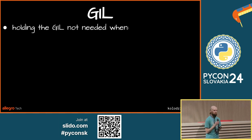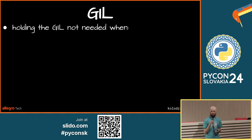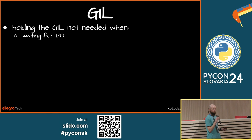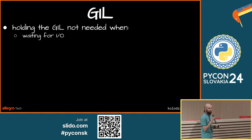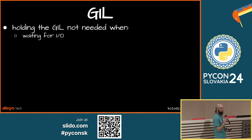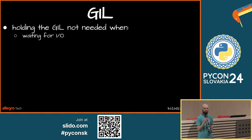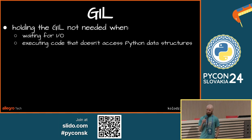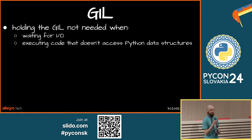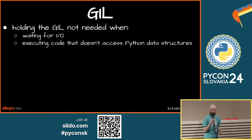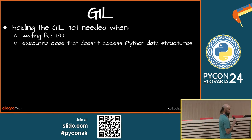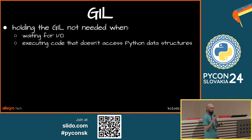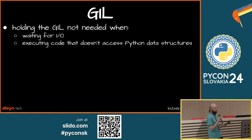It's very useful to know that the GIL doesn't need to be held by a thread at all times. For example, when waiting for IO — imagine two threads, one calls for a file on disk and the second wants to run. The first one, while waiting for IO access, doesn't need to hold the GIL; the other one can just execute and make computations. Similarly, libraries like NumPy can operate on data structures that are not Python objects, and while doing so, they don't need to hold the GIL.